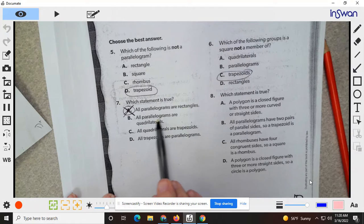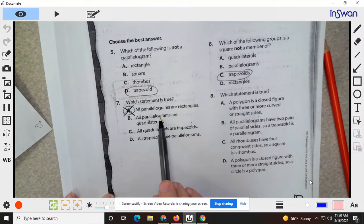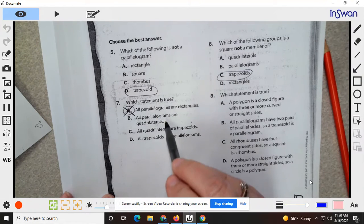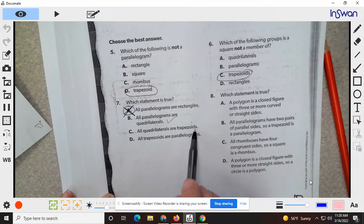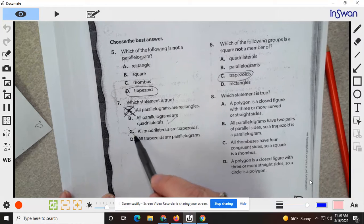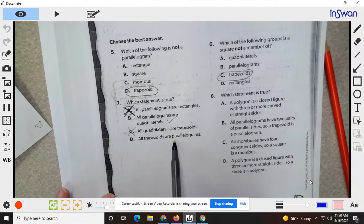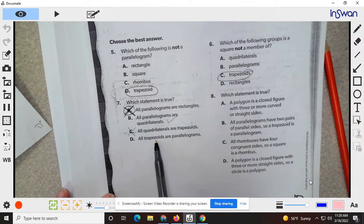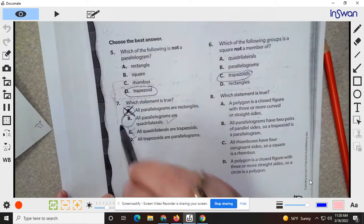All parallelograms are quadrilaterals. All parallelograms are four sided. All quadrilaterals are trapezoids. All four sided shapes are trapezoids. Again, no. All trapezoids are parallelograms. This is one set, this is two sets. So no. So B is the answer.